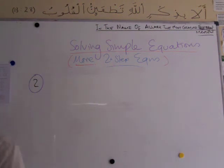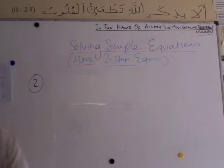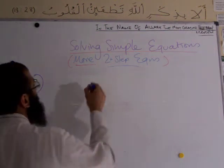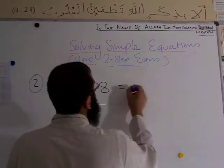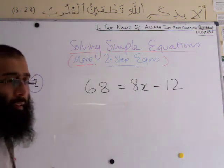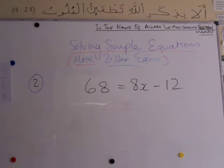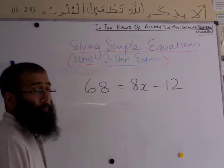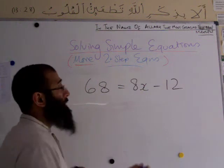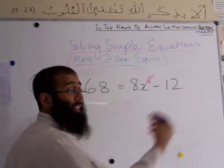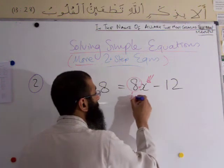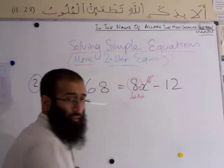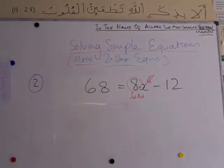We've looked at two addition questions. Let's now look at a subtraction question. The equation is 8x minus 12 equals 68 — there's a minus in there this time. Adil, where do you start the question? From the x — and we read the equation. What's been done to the x? X has been multiplied by 8 — that's the first action.